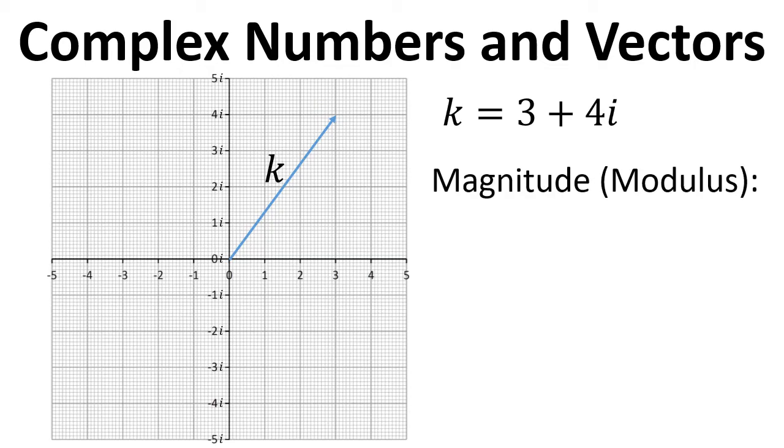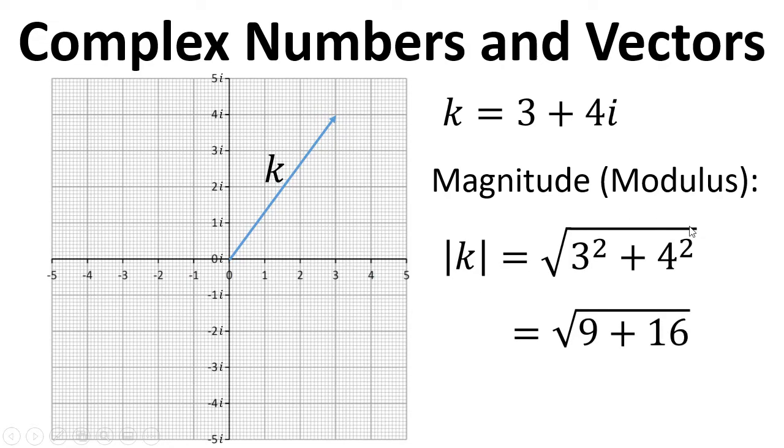We can also get the magnitude of the vector, or the modulus. The symbol for that is k with two vertical lines, and we work it out using Pythagoras. We put in the real number squared, then the imaginary number squared: the square root of 3 squared plus 4 squared equals the square root of 9 plus 16 equals the square root of 25 equals 5.